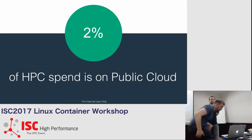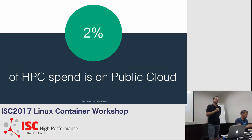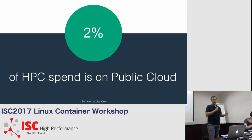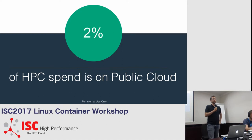I borrowed this from an analyst presentation yesterday: about two percent of all high performance computing spend is already in the cloud. HPC spend is, depending on who you ask, between 35 and 40 billion dollars a year — that includes all hardware, software, and services, but excludes headcount, power, and cooling. In general IT terms, close to ten percent is already in the cloud, counting software-as-a-service and mail servers. So in HPC as an industry, we are quite far behind.